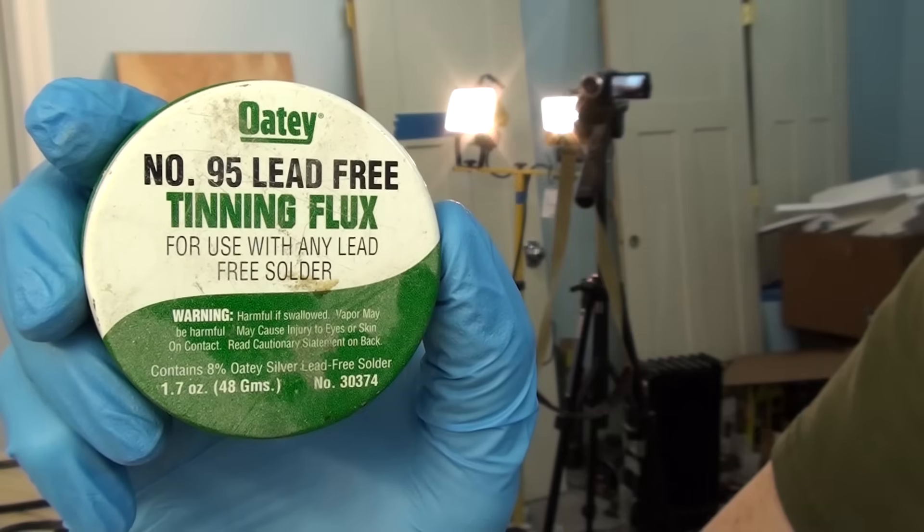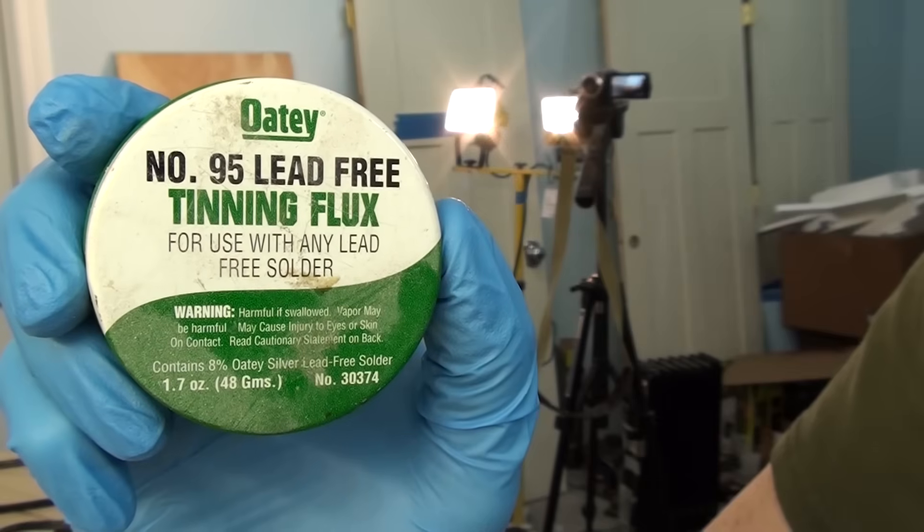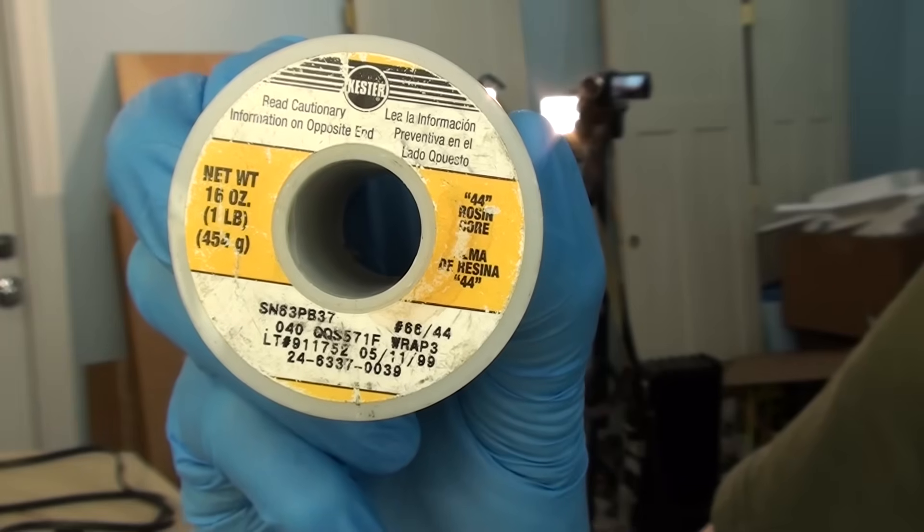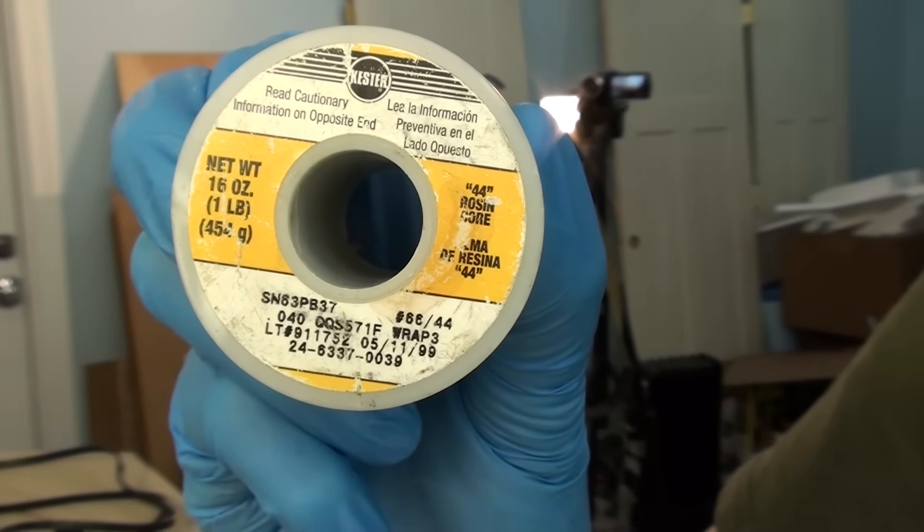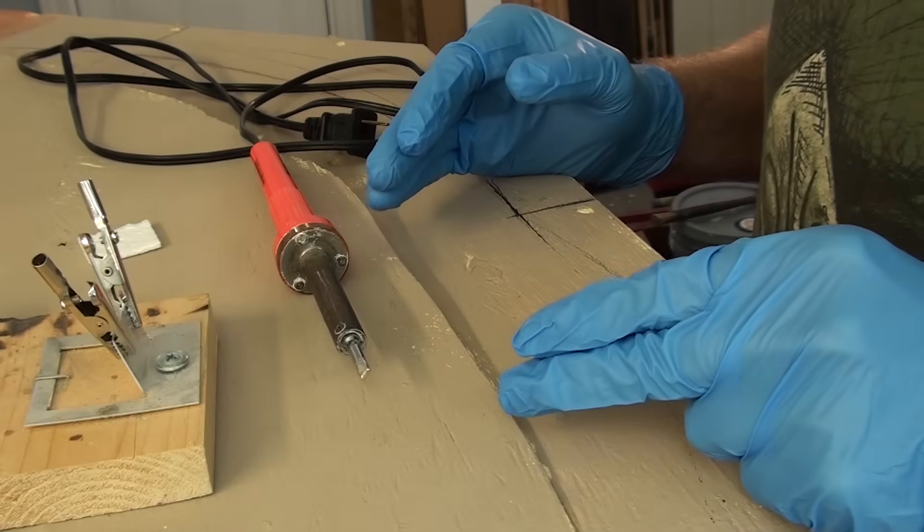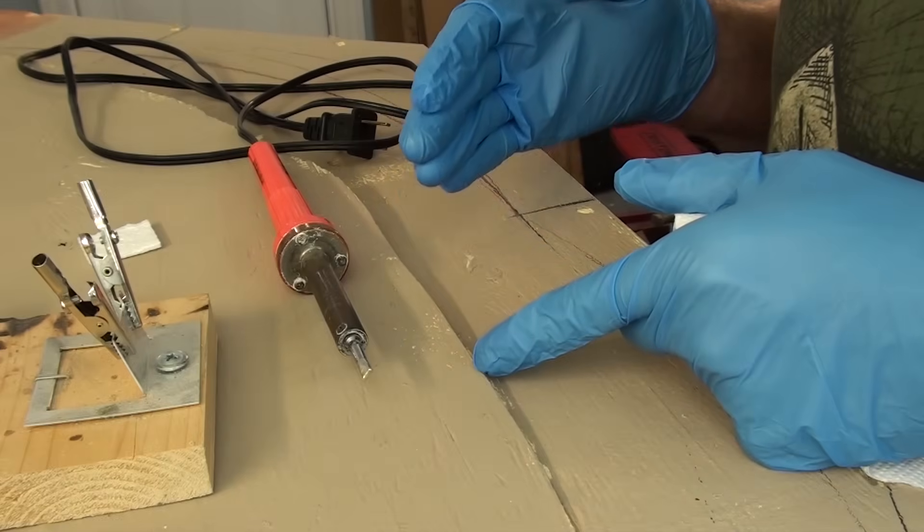I'm going to be using this number 95 lead free tinning flux. It's a basic plumber flux and can be found at most of your big box stores. I'll be using the Kester wire solder. It's a .031, 6337, 44 rosin core activated solder. It should not need to be said that the soldering iron is unplugged and it is cold. You don't want to do this with a hot soldering iron.